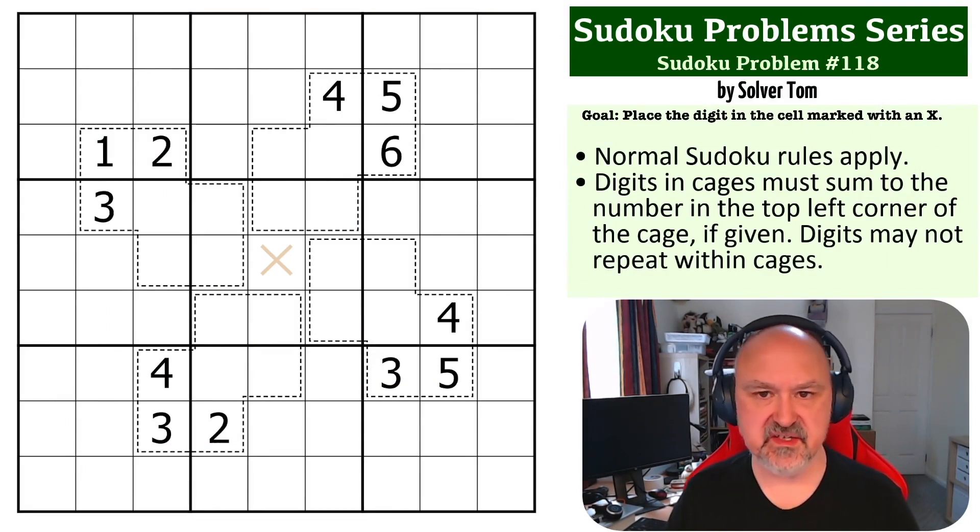This is a killer problem submitted by solver Tom. So the goal on this one is to place the digit in the cell marked with an X, and this is a killer problem.